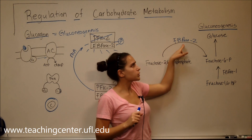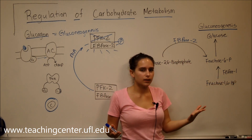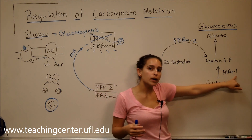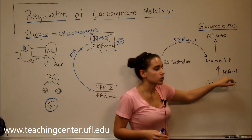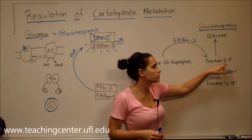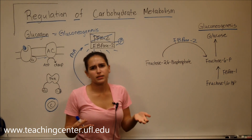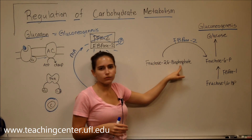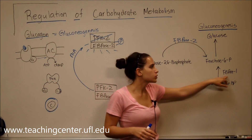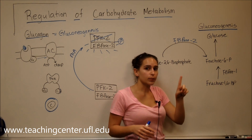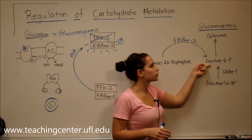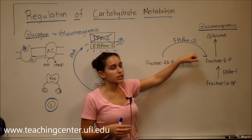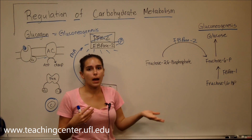Are fructose bisphosphatase 2 and fructose bisphosphatase 1 the same thing? No. Fructose bisphosphatase 2 is a regulatory enzyme, while fructose bisphosphatase 1 is in the gluconeogenesis pathway — it converts fructose 1,6-bisphosphate into fructose 6-phosphate. To remember the difference: FBPase-2 removes the phosphate on the second carbon of fructose 2,6-bisphosphate (a regulatory molecule), while FBPase-1 removes the phosphate on carbon 1 of fructose 1,6-bisphosphate. FBPase-2 is not in the pathway — it regulates carbohydrate metabolism.